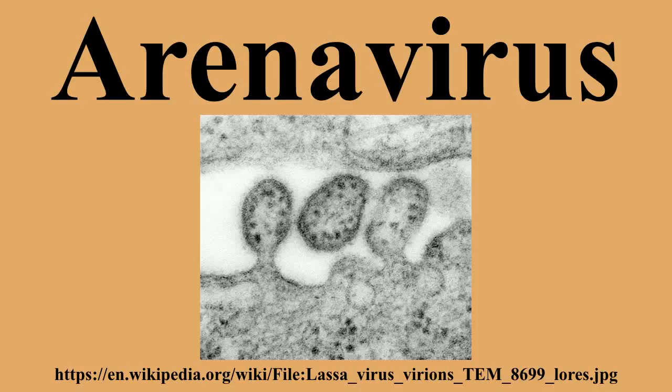Arenaviruses can be divided into two serogroups, which differ genetically and by geographical distribution. When the virus is classified Old World, this means it was found in the Eastern Hemisphere in places such as Europe, Asia, and Africa. When it is found in the Western Hemisphere in places such as Argentina, Bolivia, Venezuela, Brazil, and the United States, it is classified New World. Lymphocytic chorio-meningitis virus is the only arenavirus to exist in both areas but is classified as an Old World virus. A third group of viruses has been described from snakes.